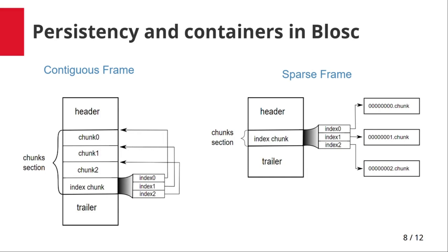If the contiguous SuperChunk is on disk, the index, metadata, and chunks are stored in the same binary file. On the other hand, a sparse SuperChunk is composed of a directory containing the data chunks stored as independent binary files, plus another file storing the chunks index and the metadata.